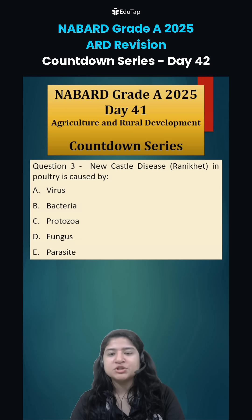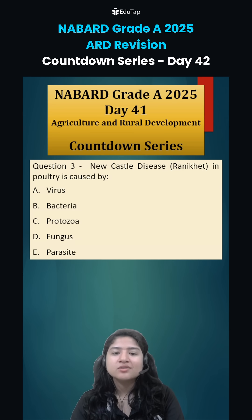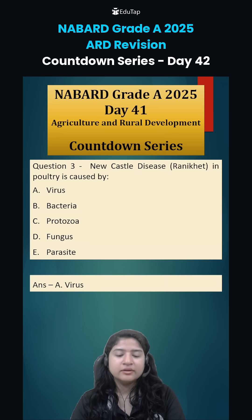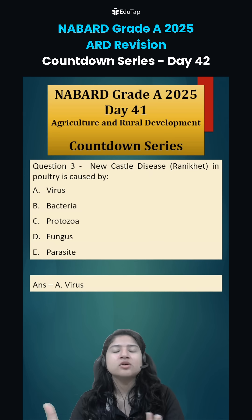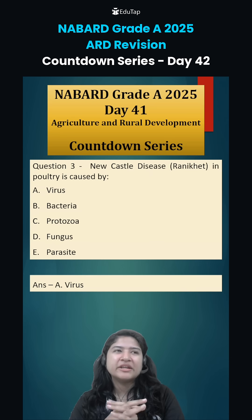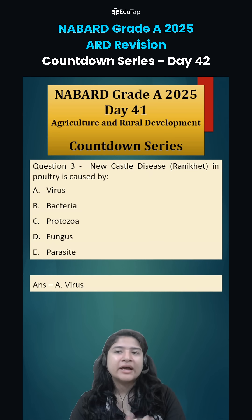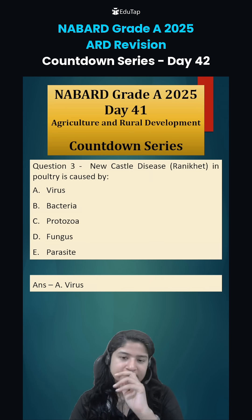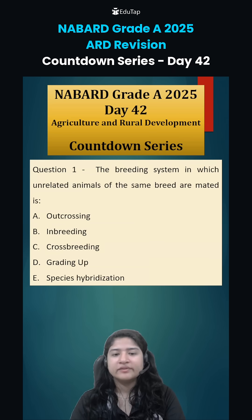Coming to question number 3, Newcastle disease, also known as Rannikate disease in poultry, is caused by which microbe? Option number A — virus — is the correct answer. This virus causes a very fatal disease in the poultry sector, and vaccinations need to be done. For example, F1, Yala, Sota, etc. There are a lot of vaccines that should be given.